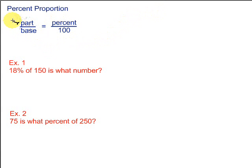The part is suggested by the word is. The base is suggested by the word of or the total. And finally the percent, we look for the percent symbol. If we're given a number and it has the percent symbol, it must go in this place. The 100 will be there all the time. We can fill that in right away when we start the problem.